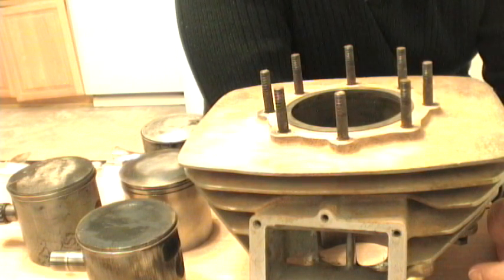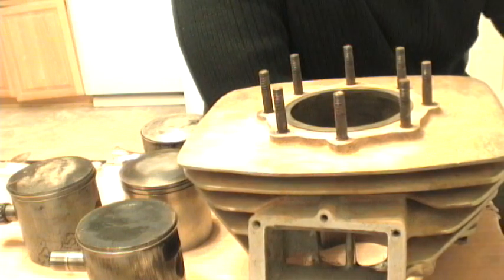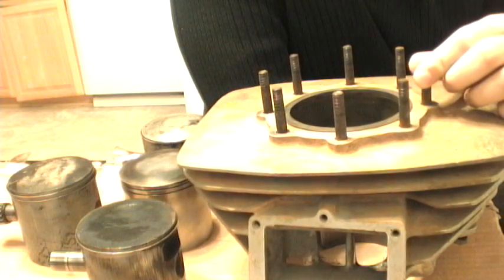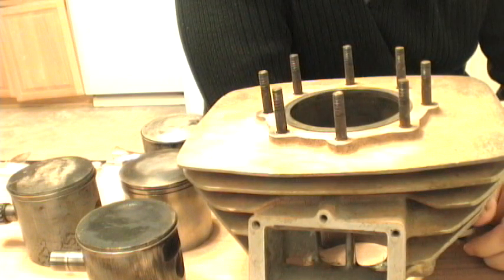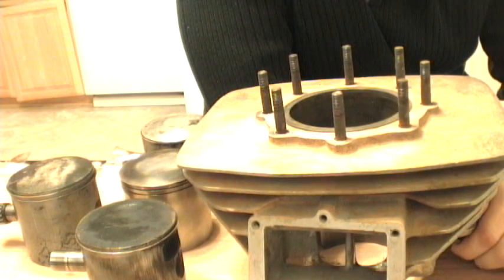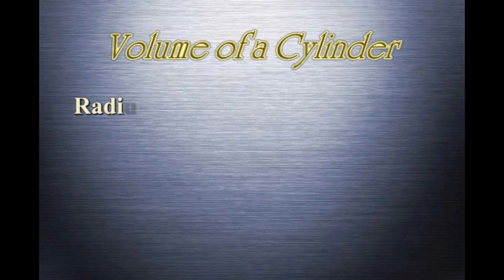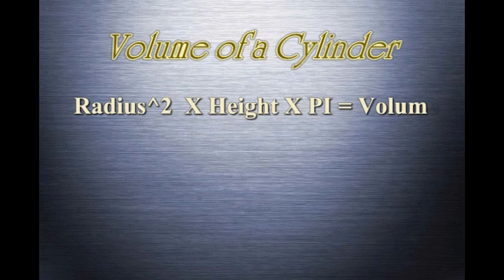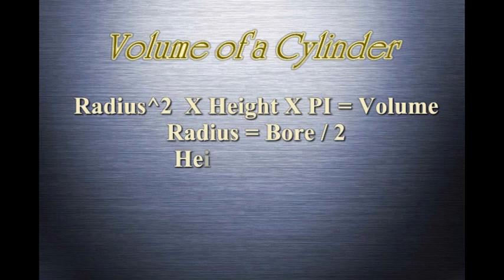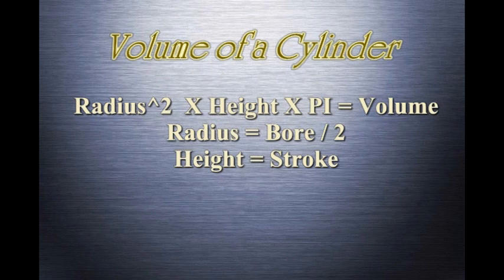With these measurements you can calculate the engine displacement, which for bikes is usually represented in cc's or cubic centimeters. The volume is a simple calculation — the formula for the volume of a cylinder is radius squared multiplied by pi multiplied by the height. For our purposes, the radius is the bore divided by 2, since the bore is the diameter of the cylinder, and the height is the stroke from bottom dead center to top dead center.